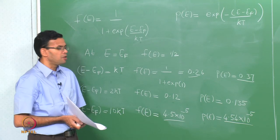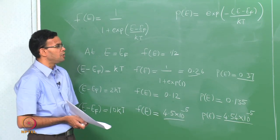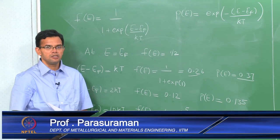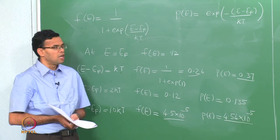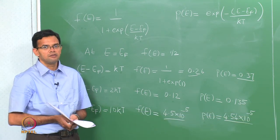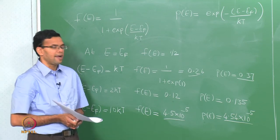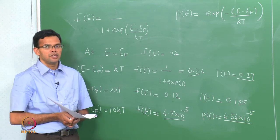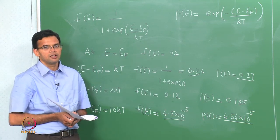We will stop here for today. In the next class, we will use these concepts of density of states and the Fermi function to calculate the electron and hole concentration. We will first start with an intrinsic semiconductor, which is a semiconductor that is pure with no dopants, and calculate the carrier concentration. After that, we will move on to extrinsic semiconductors.